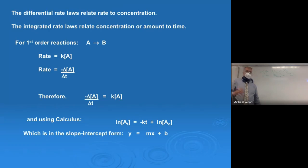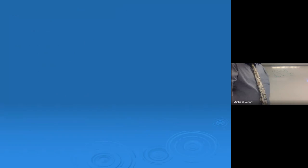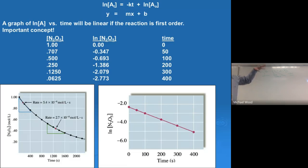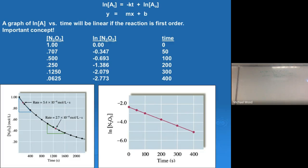I want to do one more slide and then stop. On this slide the only thing that's important is the sentence there: a graph of the natural log versus time will be linear if the reaction is first order. That's an important concept. The data and the graph I'll come back and review, but the key thing — add one more thing — a graph of the natural log of A, the reactant, versus time will be linear if the reaction is first order.